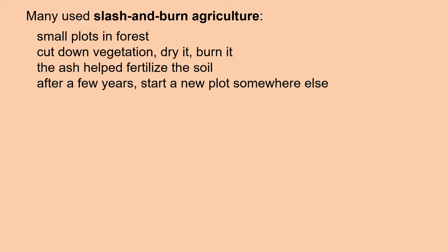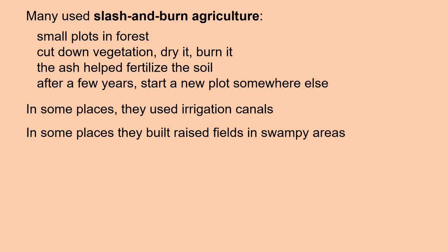Many used slash and burn agriculture. In this type of agriculture, you cut out small plots in the forest, cut down the vegetation, let it dry, and then burn it, and the ash helps fertilize the soil. One of the key aspects to the sustainability of slash and burn agriculture is that these are small plots. After a few years, you start a new plot somewhere else, and the forest is able to regrow. In some places, they used irrigation canals, and in some places they built raised fields in swampy areas.